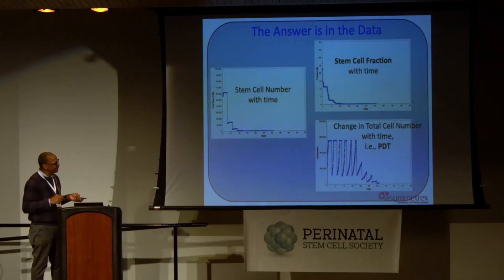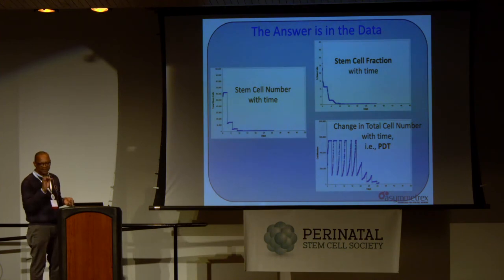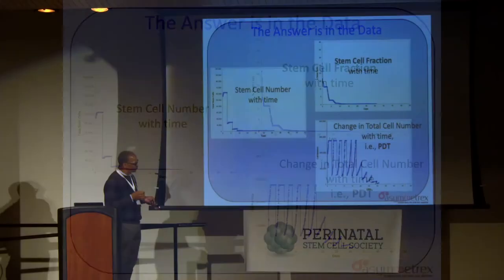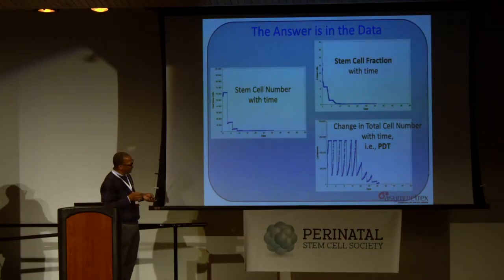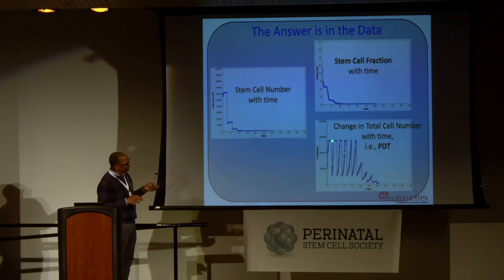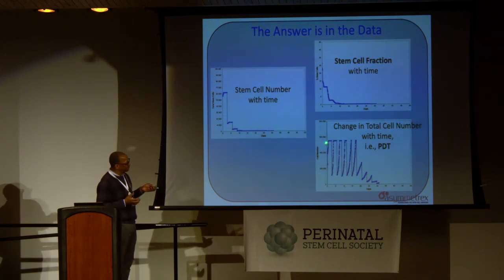It's this data set here — this is the change in total cell number over time. This is the computer simulation, but the computer is simulating something that we actually measure. So think about what a serial culture is like: you put cells in culture, they grow, and in the early phases they fill up the dish and can't grow anymore, so they stop growing there.